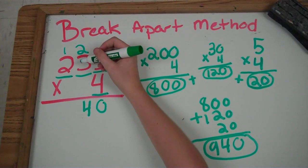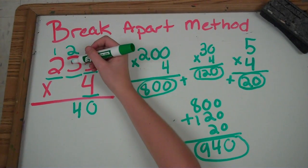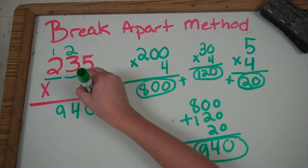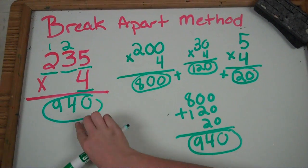Now 4 times 2 is 8, plus the 1 that you regrouped is 9. So you get 940. And it matches.